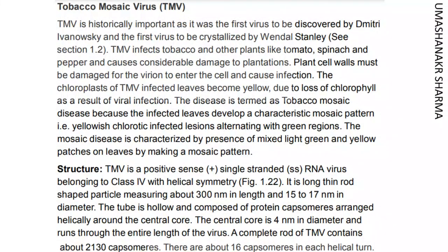TMV is historically important as it was the first virus to be discovered by Dmitry Ivanovsky and the first virus to be crystallized by Wendell Stanley. TMV infects tobacco and other plants like tomato, spinach, and pepper and causes considerable damage to plantations. Plant cell walls must be damaged for the virion to enter the cell. The chloroplasts of TMV infected leaves become yellow due to loss of chlorophyll. The disease is termed tobacco mosaic disease because infected leaves develop a characteristic mosaic pattern, with yellowish chlorotic lesions alternating with green regions.